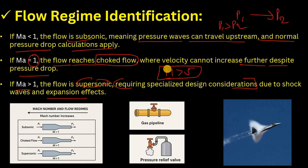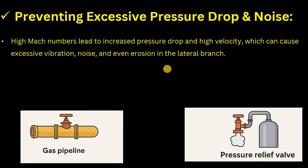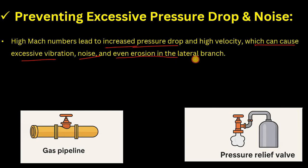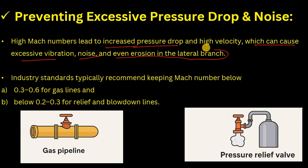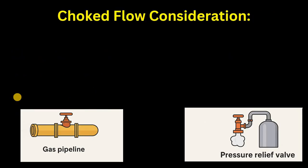High Mach numbers increase velocity and pressure drop, causing excessive vibration, noise, and even erosion in the lateral branch — all potentially leading to mechanical failure. For industry standards, gas lines typically keep Mach number between 0.3 and 0.7, while relief lines and blowdown lines typically keep it below 0.2 to 0.3.